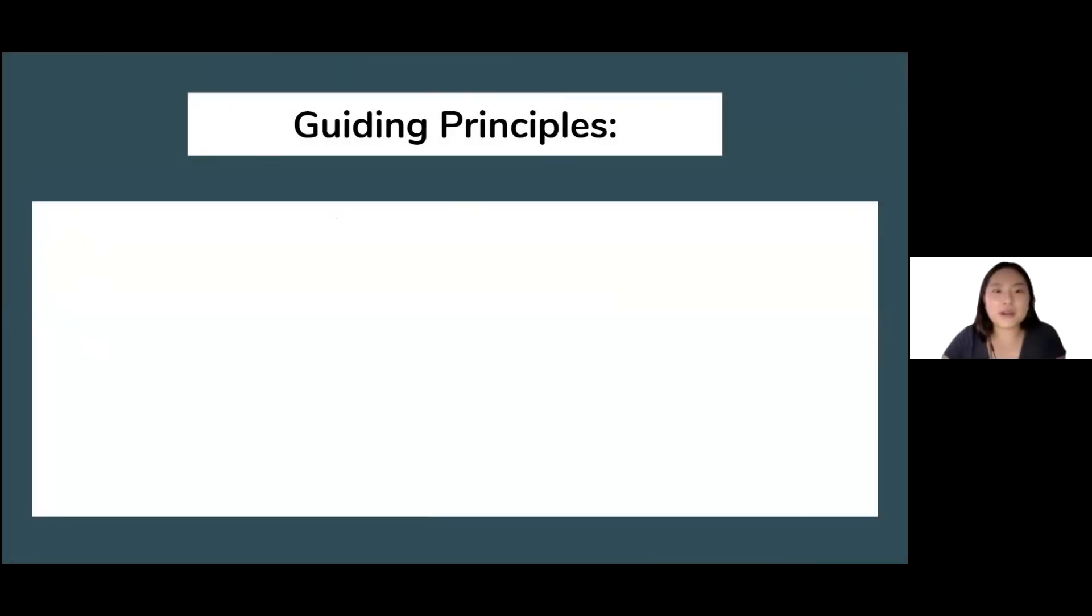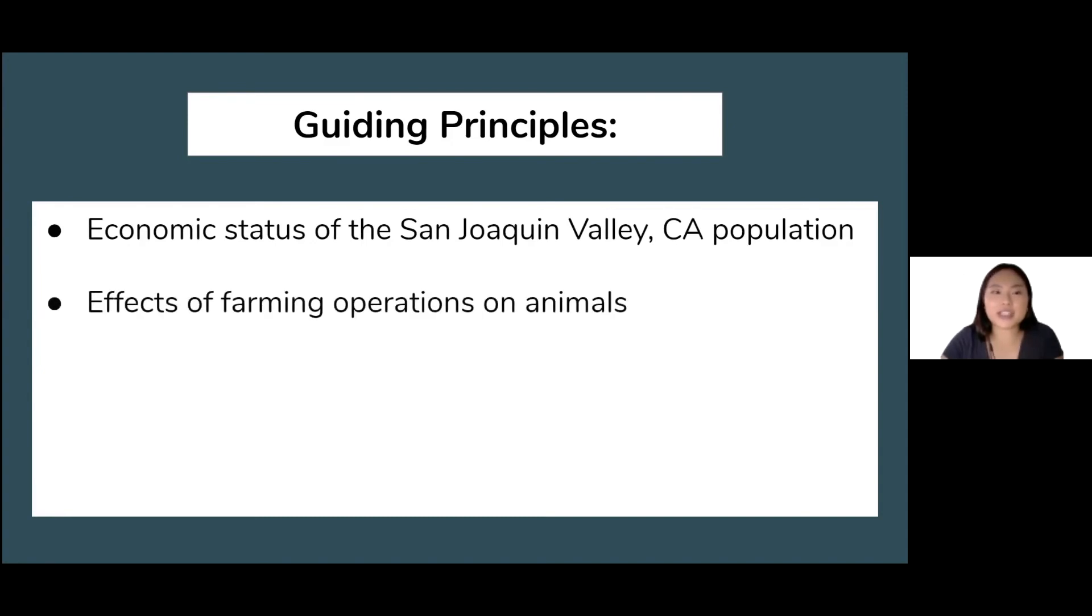Before we get into our project, some of the guiding principles that have helped us along the way were the economic status of the San Joaquin Valley population, effects of farming operations on animals, establishing a circular system for the ecosystem, and understanding and ensuring water quality.